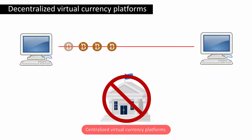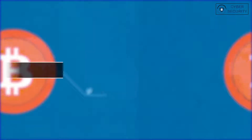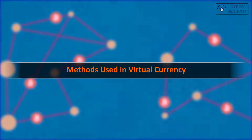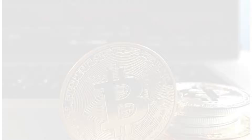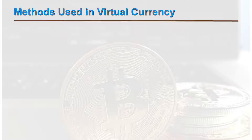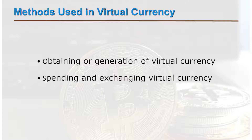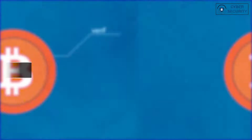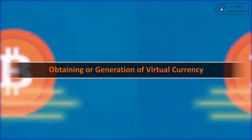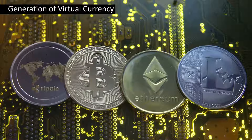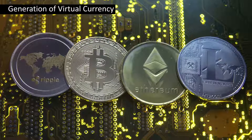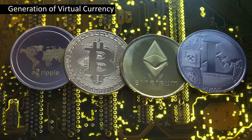Decentralized platforms can be obtained through a manufacturing or computing process. The centralized and decentralized platforms are used by various business organizations. There are two predominant ways virtual currency can be used: first, obtaining or generating the virtual currency, and second, spending and exchanging the virtual currency. Since there is no universal virtual currency across the digital medium, there are several different ways and methods to obtain or generate virtual currencies.